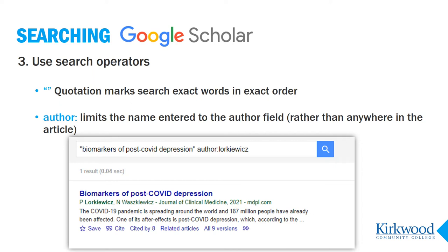If you know the author and maybe something about the subject, enter the author like this with the word author and a colon in front of the name. You can also add any other keyword terms you know about the subject or title. With Google search operators, you can always use more than one in the same search.